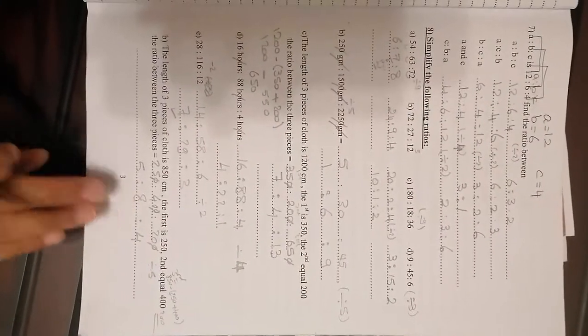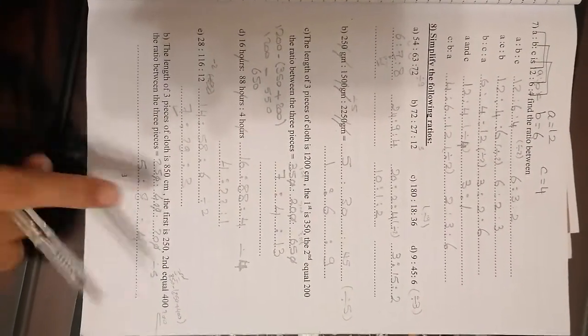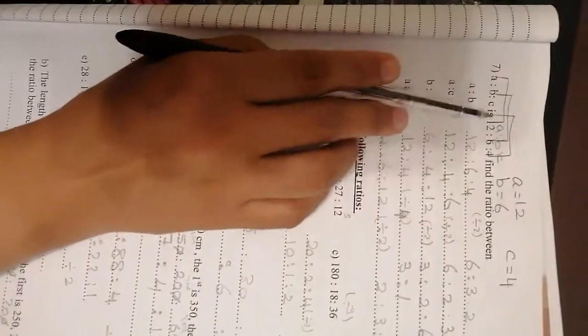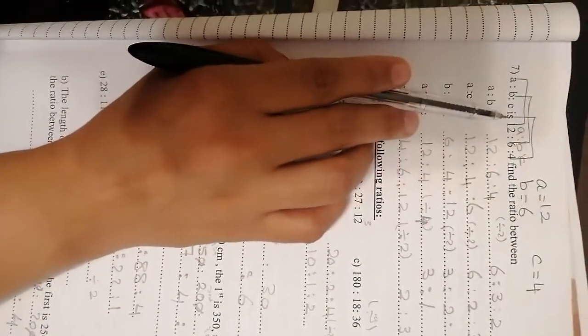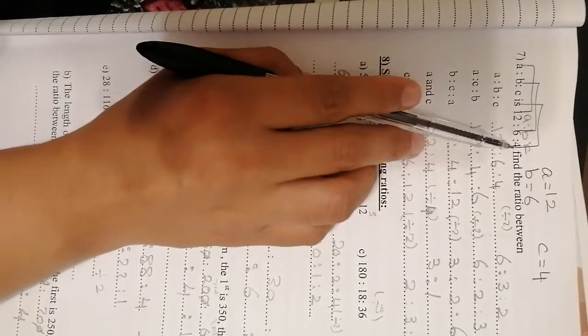Hello everyone, we are going to continue the ratio booklet page 3, question 7. Here I have 3 ratios, A to B to C, 12 to 6 to 4.